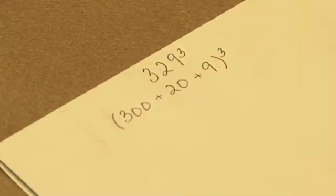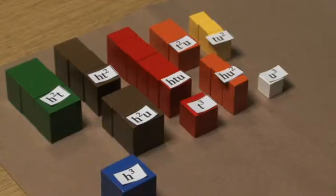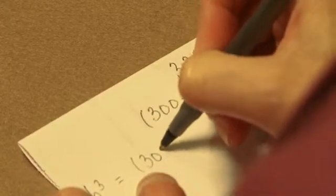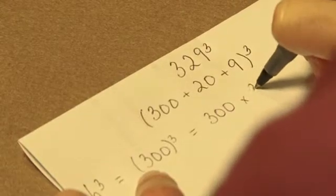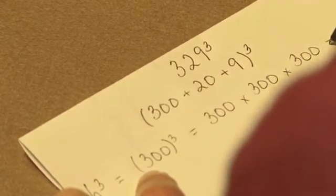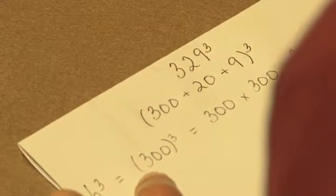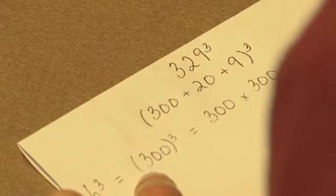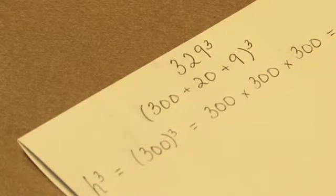The first component that we're going to work with is the 100 cubed. So we would write h cubed, and that would equal 300 cubed or 300 times 300 times 300, and that equals 27 million. We know that our 100 cubed is always going to be in the millions value.